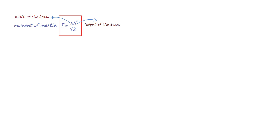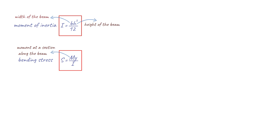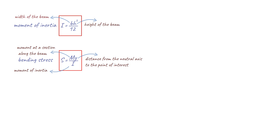Next, we have the formula for bending stress in a beam. This is represented by the equation where M is the moment at a section along the beam, c is the distance from the neutral axis to the point of interest, and I is the moment of inertia of the beam. This formula is used to calculate the amount of stress a beam can withstand in a bending load.